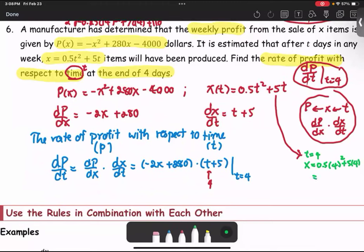So we have 16 times 0.5, which is 8, plus 5 times 4, which is 20. X equals 28 when T equals 4. So X can be replaced with the value 28.